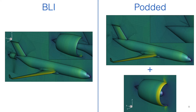For the STARC-ABL concept, the BLI configuration consists of the wing, fuselage, vertical tail, and the aft propulsor, while the podded configuration consists of two separate CFD models. First, we have the CFD model of the non-BLI airframe consisting of the wing, fuselage, and vertical tail. Secondly, we have a separate podded fan model that ingests free-stream air instead of ingesting the wake of the fuselage. In both configurations, we use an actuator zone model to model the effect of the fan on the CFD domain.